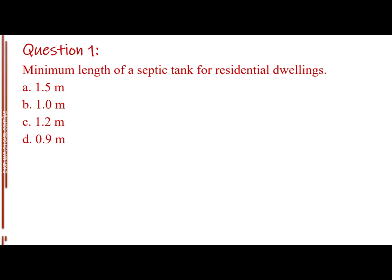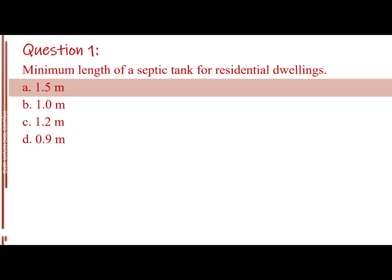Question number 1. Minimum length of a septic tank for residential dwellings. Letter A, 1.5 meters. Letter B, 1.0 meter. Letter C, 1.2 meters. Letter D, 0.9 meter. The answer is Letter A, 1.5 meters.